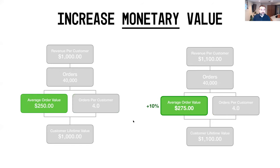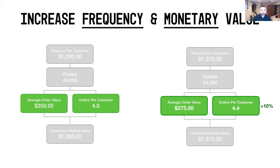Another way to look at this is average order value — the monetary value. If we use an average order value of $250 and increase that by 10%, it goes from $250 up to $275. With $275, holding everything else constant, that generates a higher revenue per customer of $1,100, or another 10%. Now if we look at the exponential value — taking both average order value and orders per customer and increasing them both by 10%, so average order value to $275 and orders per customer to 4.4 — we increase orders to 44,000 and generate a revenue per customer of $1,210, a 21% increase.